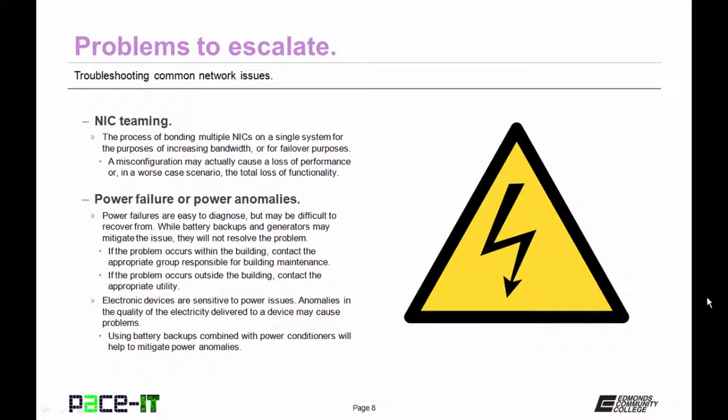Then there are power failure or power anomalies. Power failures are easy to diagnose but may be difficult to recover from. While battery backups and generators may mitigate the issue, they will not resolve the problem. If the problem occurs within the building, contact the appropriate group responsible for building maintenance.